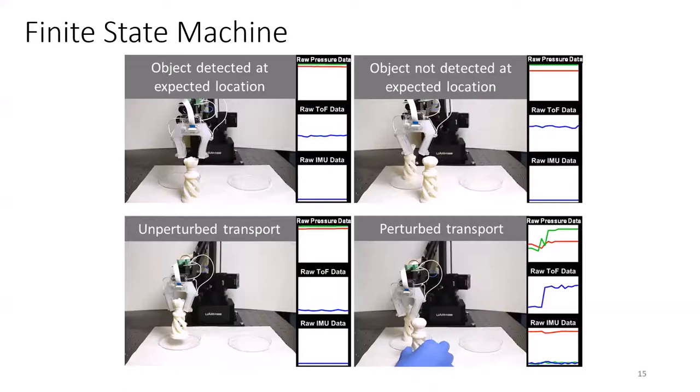One example of how the threshold scheme is used is in object detection, which uses the time-of-flight sensor. After the system has calculated where the object is, it moves to the location and checks if it is there by measuring the distance to the nearest surface. On the left, the distance is smaller because the object is present, while on the right, the distance is greater because the object is not present. This is reflected in the differences in sensor data.